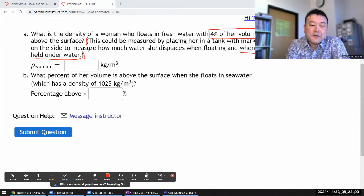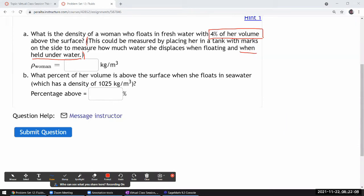So the question asks, what is the density of a woman who floats in fresh water with 4% of her volume above the surface? Okay, so there are some information given in the question that you should mark up and make sure you fully get what it means.